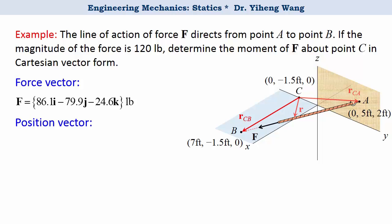From inspection I choose vector R_CB because it can be easily determined to be 7i foot. Now we are ready to calculate the moment vector using this vector.